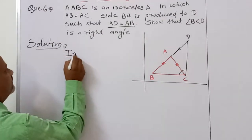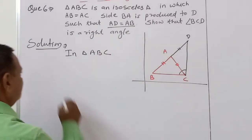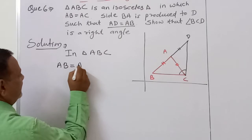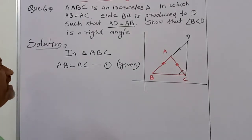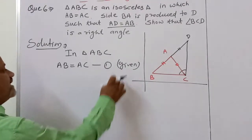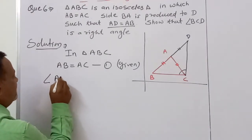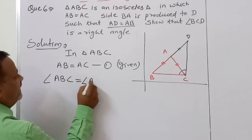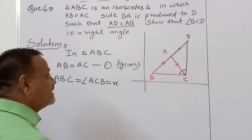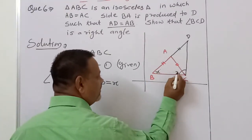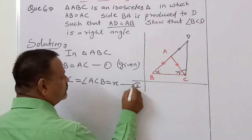In triangle ABC, the given information is AB equals AC — this is equation number 1, which is given. Since the triangle is isosceles, the two base angles are equal. So angle ABC equals angle ACB. We consider this as x degrees — both these angles are x. This is equation number 2.